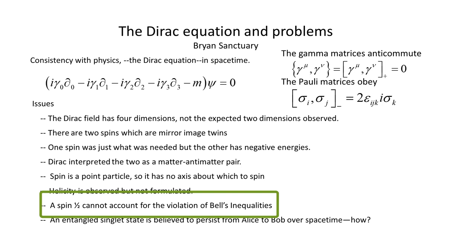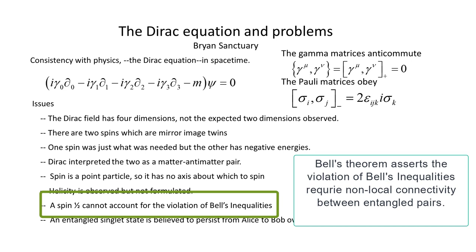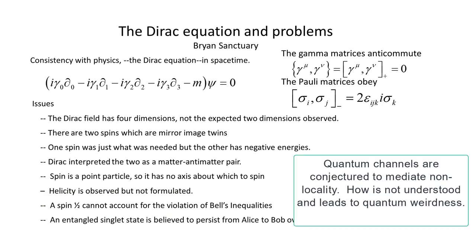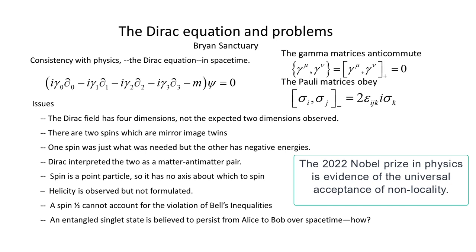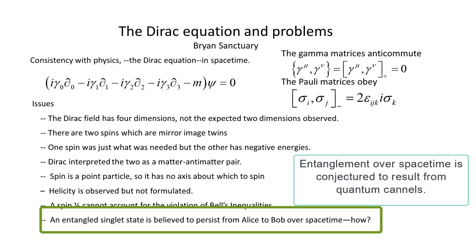Spin plays a major role in the foundations of quantum mechanics, and in EPR coincidence experiments. These show that Bell's inequalities are violated, and Bell's theorem follows by asserting the violation requires non-local connectivity between the two measuring filters that can be space-like separated. Teleportation is deemed possible, and quantum channels are conjectured to connect these two distant particles. How this non-locality is maintained is not presently understood, and is called quantum weirdness. Non-locality is universally accepted, as evidenced by the 2022 Nobel Prize in Physics. Personally, I reject the concept of non-locality as unfeasible.